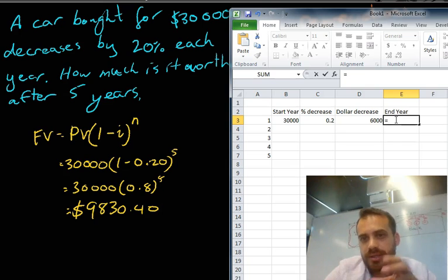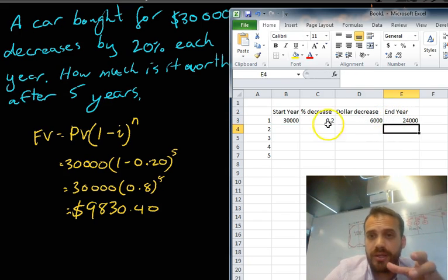Now, that means that by the end of the year, it's going to be equal to whatever its start value was, minus whatever its dollar decrease was. So, at the end of the year, it's lost $6,000. Now, it's worth $24,000.